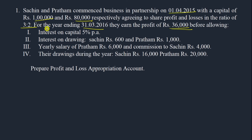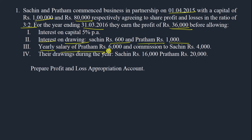The given information includes: interest on capital at 5% per year — so if the capitals are 1 lakh and 80,000, we'll charge 5% on those investments. Next is interest on drawings: 600 rupees for Sachin and 1,000 rupees for Pratham — these are the interest charges on whatever drawings were made by each partner.